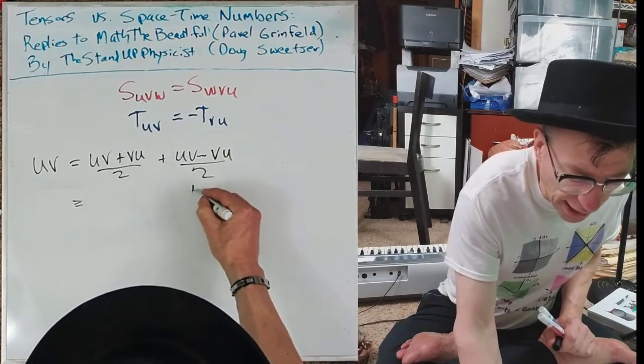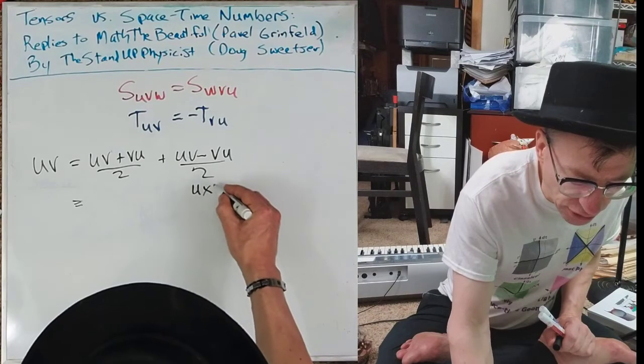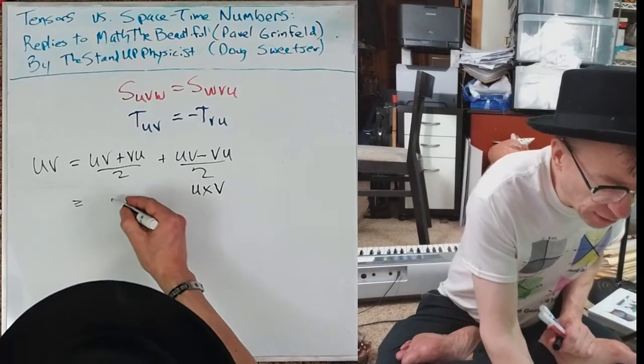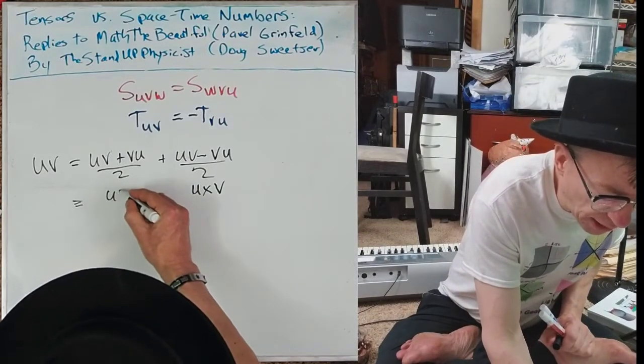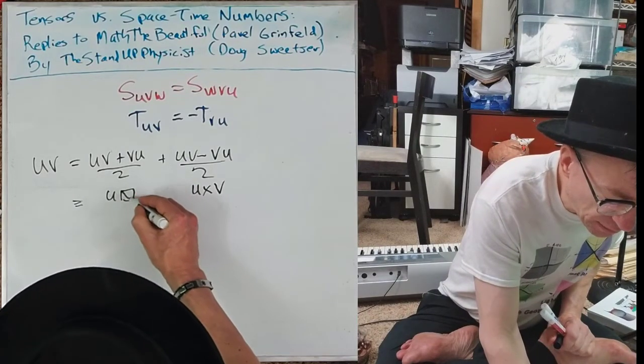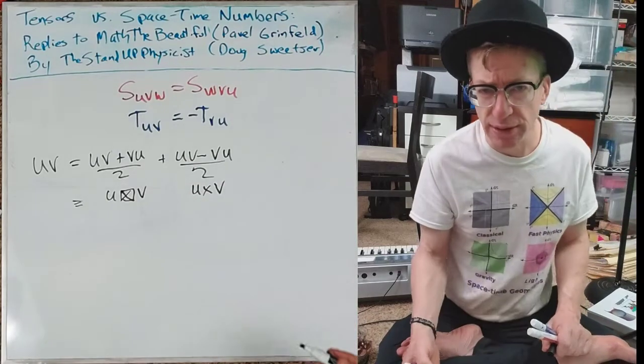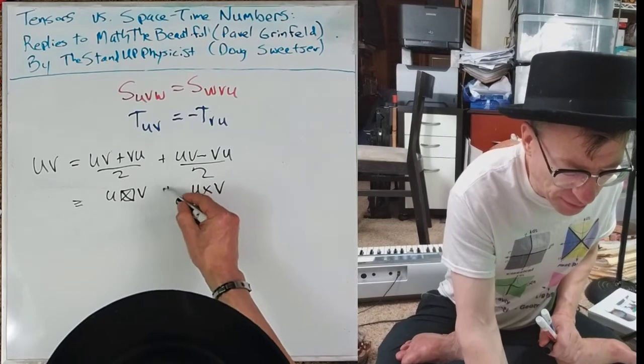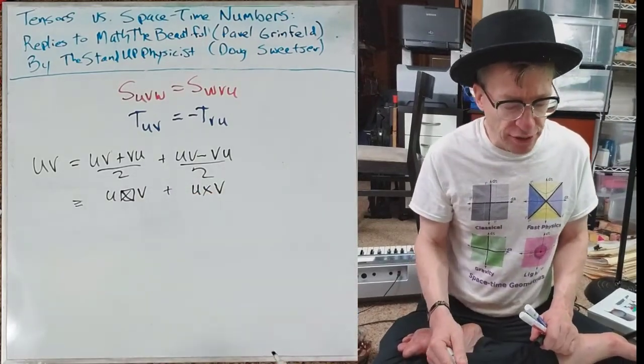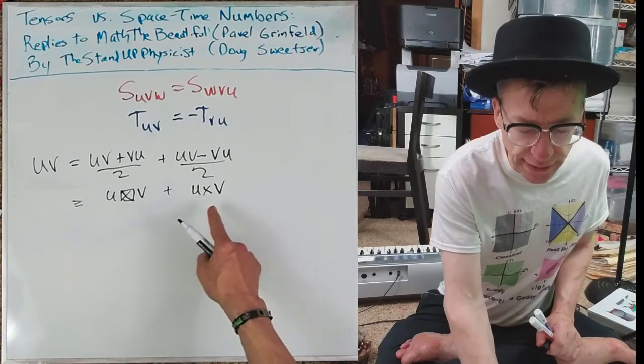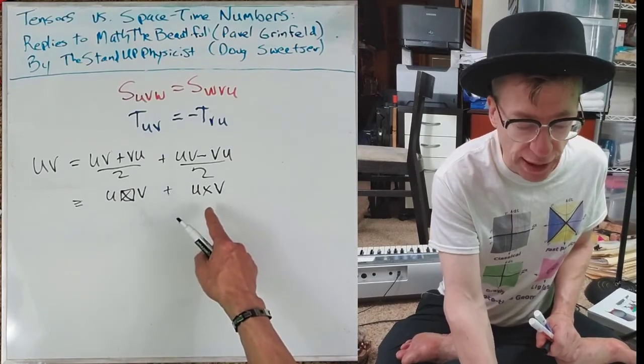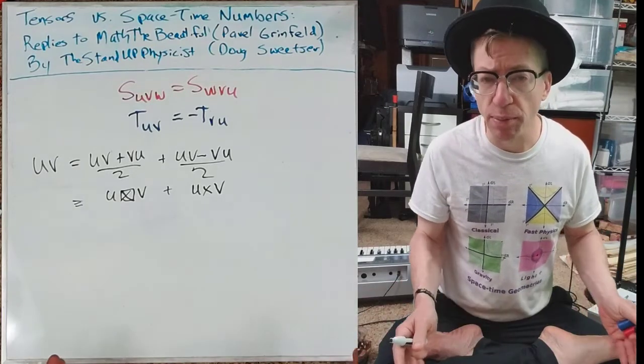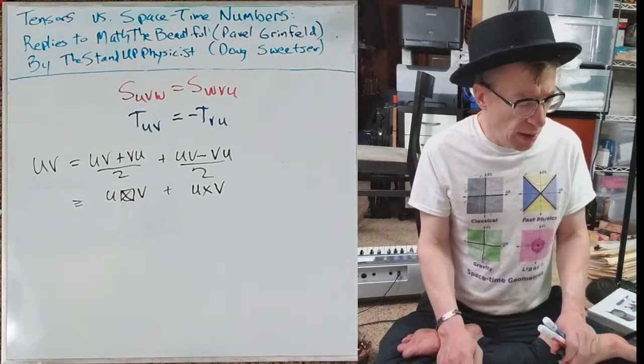This already has a bit of nomenclature to it. It's just a typical cross product. I'm going to develop my own nomenclature for this. I'm just going to put a box around it just so it's very similar to the other one and takes less writing. So this is the symmetric product. This is the anti-symmetric or cross product. And you can do that for any space-time number you ever come across.